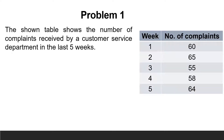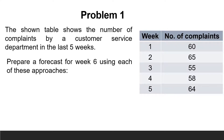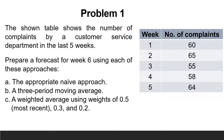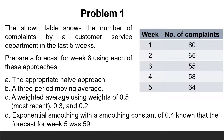The first problem: the shown table shows the number of complaints received by a customer service department in the last five weeks. Prepare a forecast for week 6 using each of these approaches: the appropriate naive approach, a three-period moving average, a weighted average using weights of 0.5 (most recent), 0.3, and 0.2, and exponential smoothing with a smoothing constant of 0.4, given that the forecast for week 5 was 59.